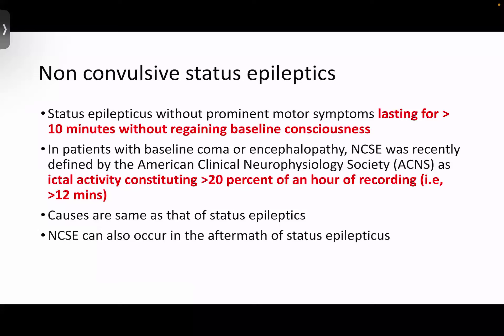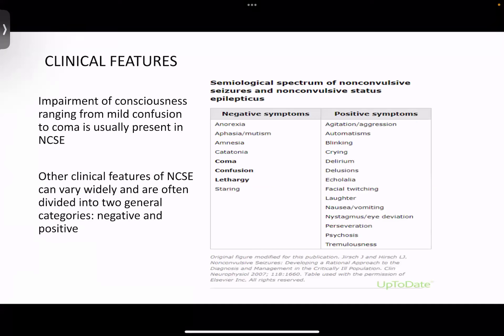Causes are more or less the same as that of generalized convulsive status epilepticus. Non-convulsive status epilepticus can also occur in the aftermath of generalized convulsive status epilepticus — that is, patients can proceed to non-convulsive status epilepticus. There may be subtle signs we need to be aware of to pick up these patients. The impairment in consciousness may range from mild confusion to frank coma.